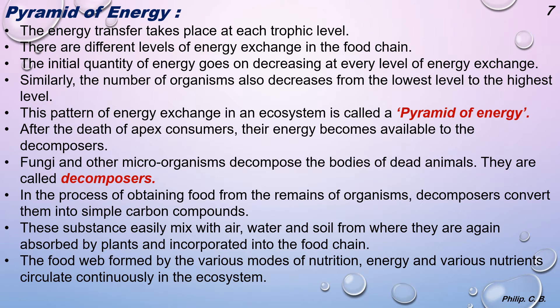Moving further to the pyramid of energy. Energy transfer takes place at each trophic level — from lower to higher level, step by step. It cannot jump directly from the ground level to the second or third level. As seen in the food chain: grass → herbivores → frog → snake → hawk. If any one is removed, the chain is disturbed. The initial quantity of energy goes on decreasing at every level of exchange.